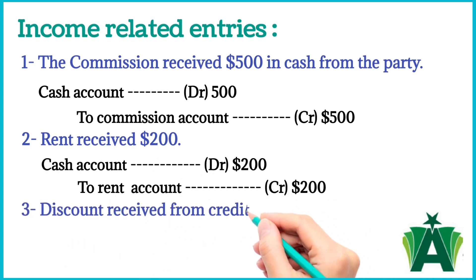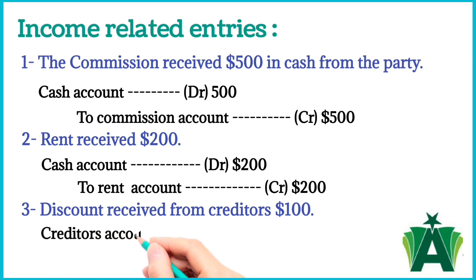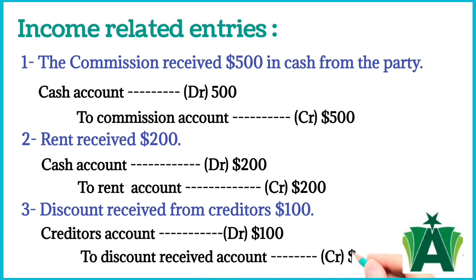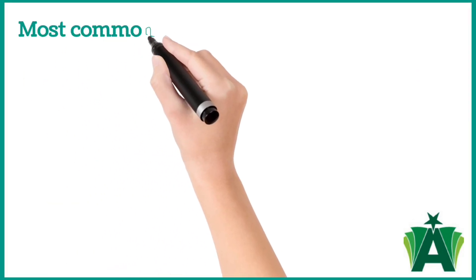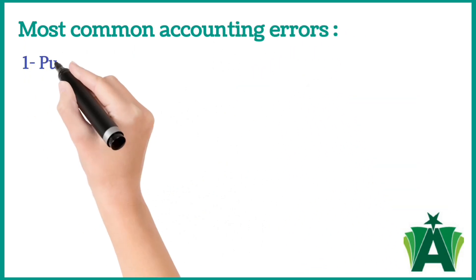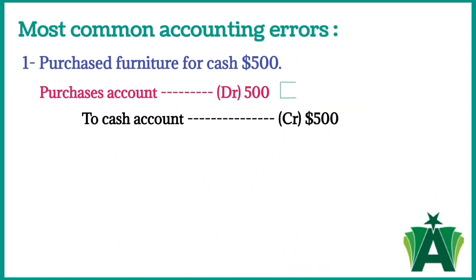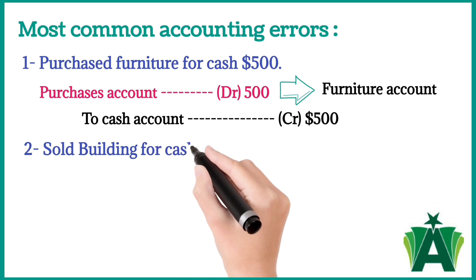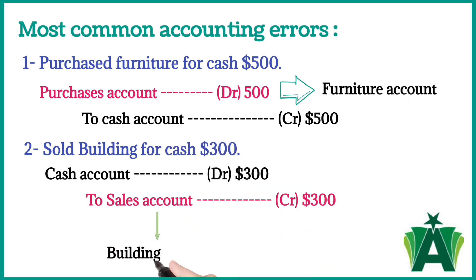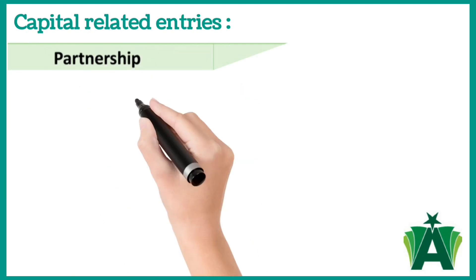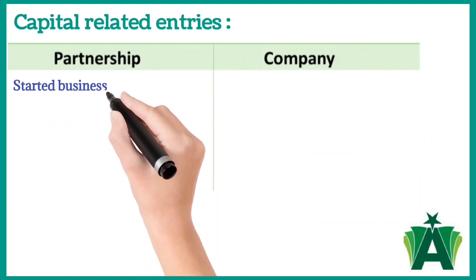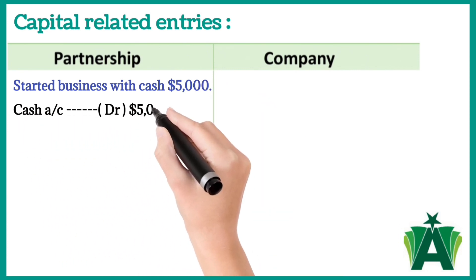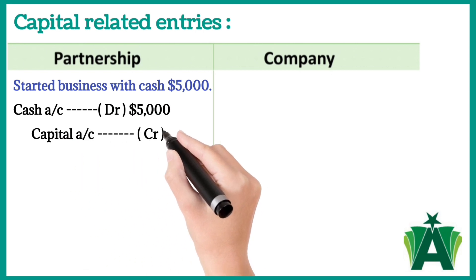Discount received from creditors $100. Here are some of the most common accounting errors that new accounting students make. Purchased furniture for cash $500: debiting purchases account instead of a furniture account. Sold building for cash $300: crediting sales account instead of a building account. In a partnership business, when started business with cash $5,000, the journal entry will be: cash account debit $5,000, capital account credit $5,000.